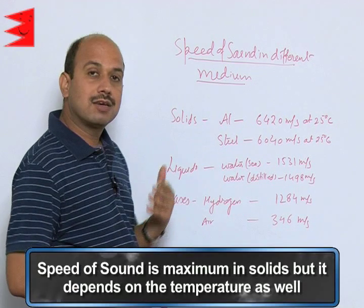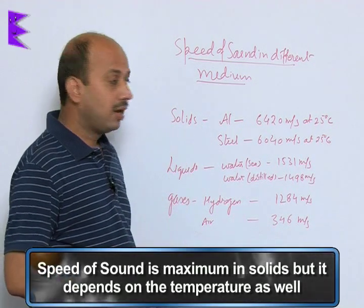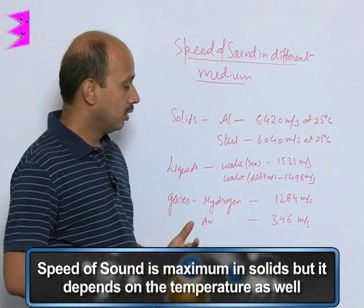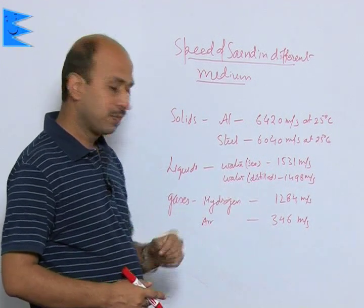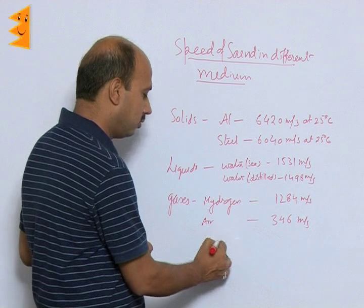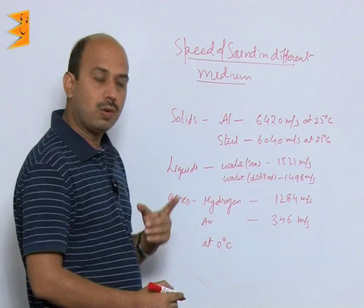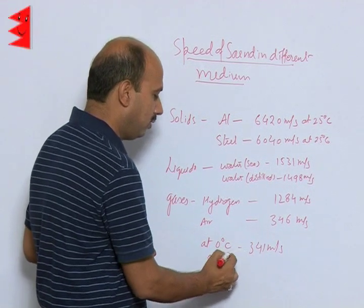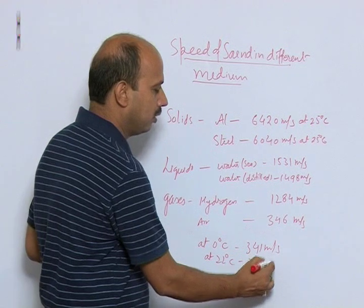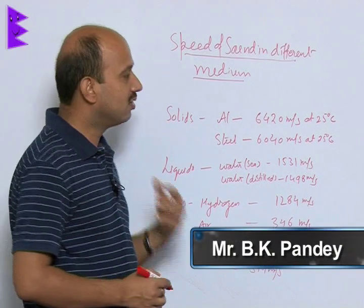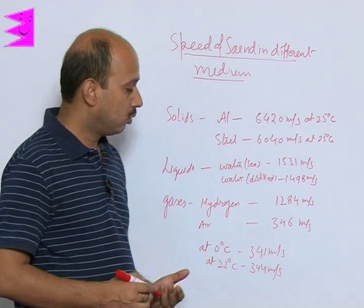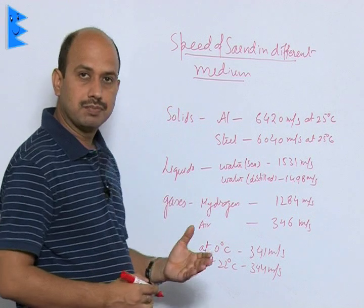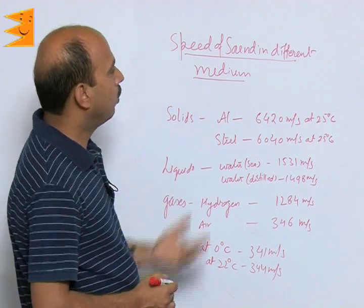Sound has maximum speed in solids, but it also depends on temperature. If you increase the temperature, speed of sound increases. For example, the speed of sound in air at 0 degree Celsius is 341 meter per second, but at 22 degree Celsius it is 344 meter per second. So here we are discussing variation of the speed of sound with temperature as well as with the nature of the medium.